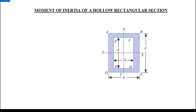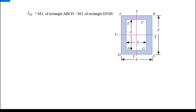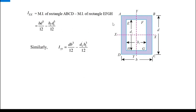Next is the hollow rectangular section. We have already derived the equation for a solid rectangle, so this is straightforward. The bigger rectangle has dimensions B × D and the smaller removed portion has dimensions b₁ × d₁. The moment of inertia is: Ixx = BD³/12 − b₁d₁³/12. Similarly for the Y-axis: Iyy = DB³/12 − d₁b₁³/12.